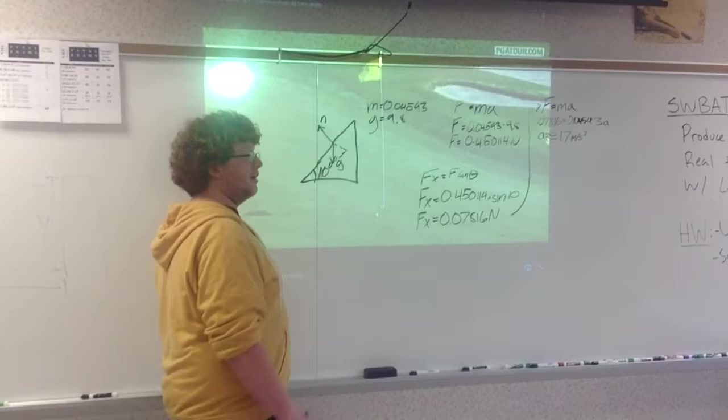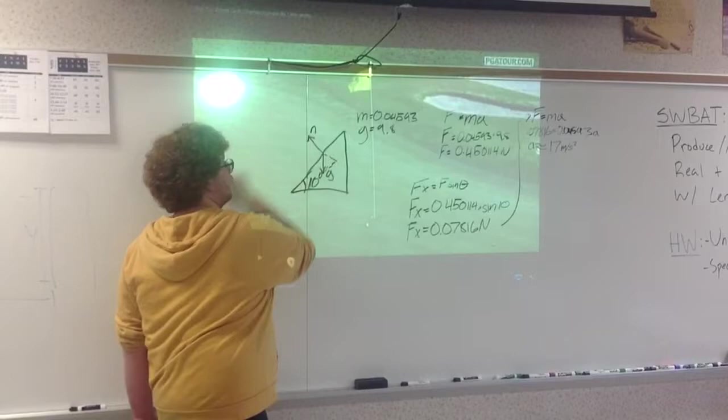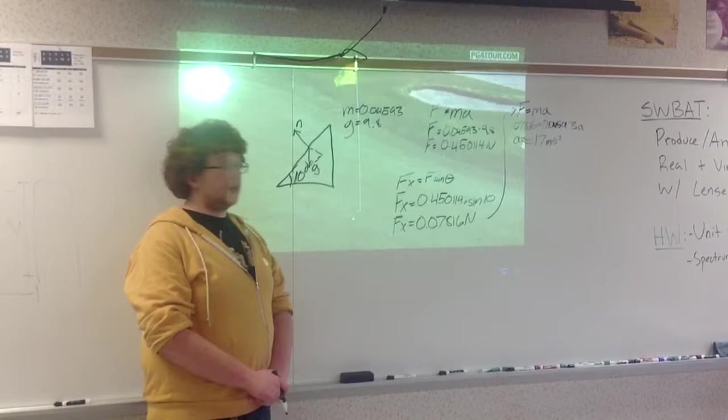So we draw the free body diagram. Of course, the ball is here. You've got the force of gravity acting down on the ball and then the normal force. The mass of the golf ball is approximately 0.04593 kilograms. And the force of gravity is 9.8 meters per second squared.